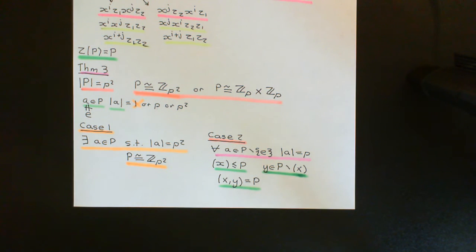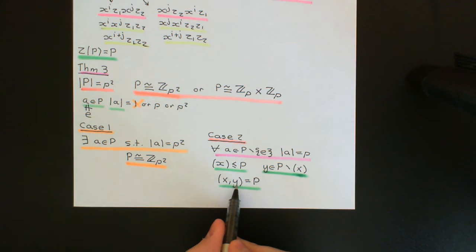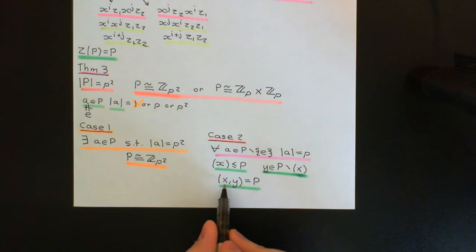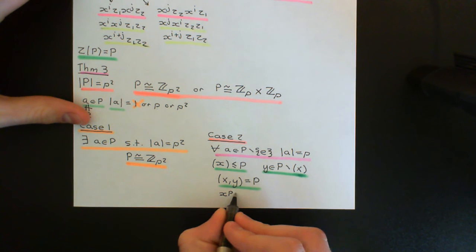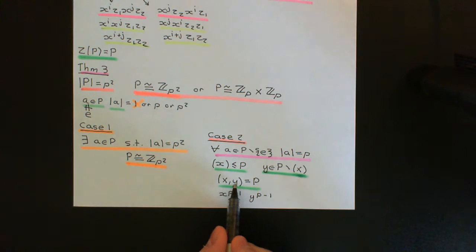As we discuss in the video on subgroups generated by subsets of a group, the way of constructing this is by taking all finite products of elements from the set containing x and y, and their inverses. Because x and y both have order equal to p, their inverses are just themselves to the power of p minus 1. So the inverse of x is x to the power of p minus 1, and the inverse of y is y to the power of p minus 1. We need to construct the set containing all finite products of x, y, x^{p-1}, and y^{p-1}.